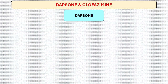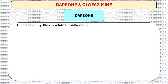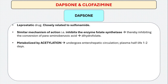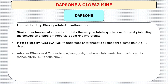Moving on to some important features about the individual drugs. First, Dapsone. Dapsone is a bacteriostatic drug. It is closely related to sulfonamides, and it inhibits the enzyme folate synthetase, thereby inhibiting the conversion of PABA to dihydrofolate. It is metabolized by acetylation with a half-life of 1 to 2 days. The adverse effects are mainly GI disturbance, methemoglobinemia, and hemolytic anemia in G6PD-deficient patients.